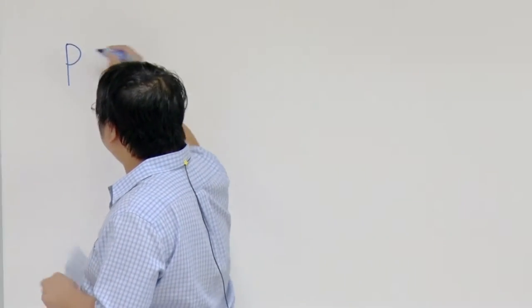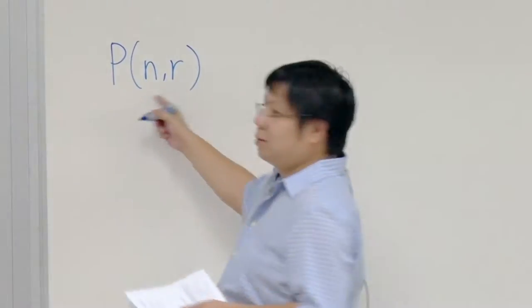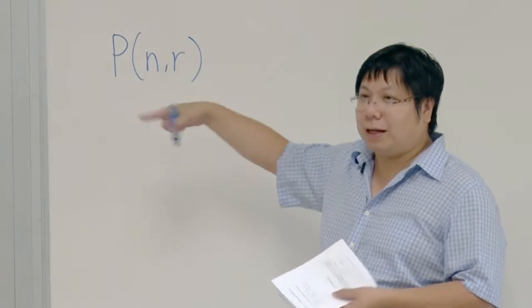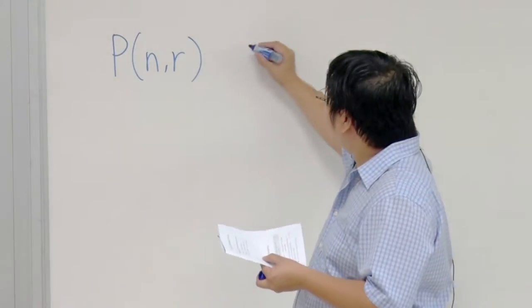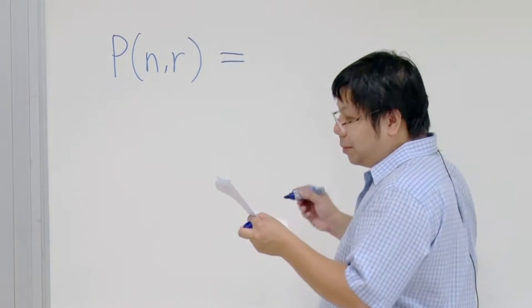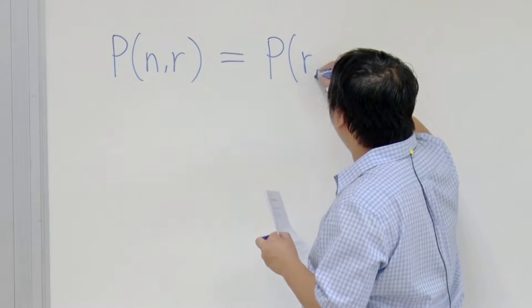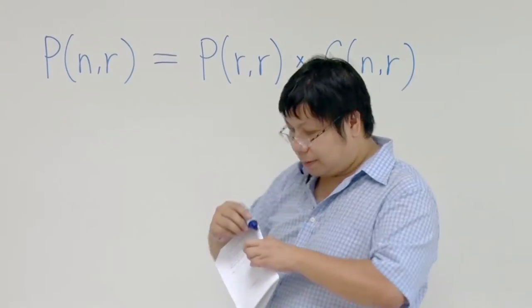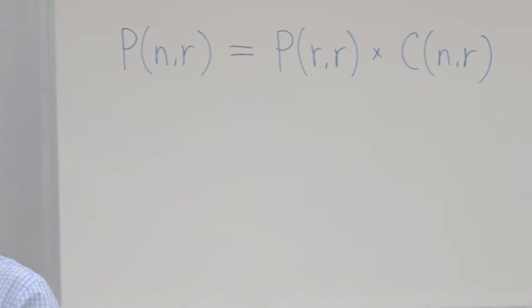We still don't know the formula, but I'm asking you to tell me why the following formulas are correct. We don't know what P(n,r) is — we just know its meaning. P(n,r) is defined as the number of ways to take r objects out of n and make an arrangement. We want to show that P(n,r) equals P(r,r) times C(n,r). Prove that without knowing the formula.